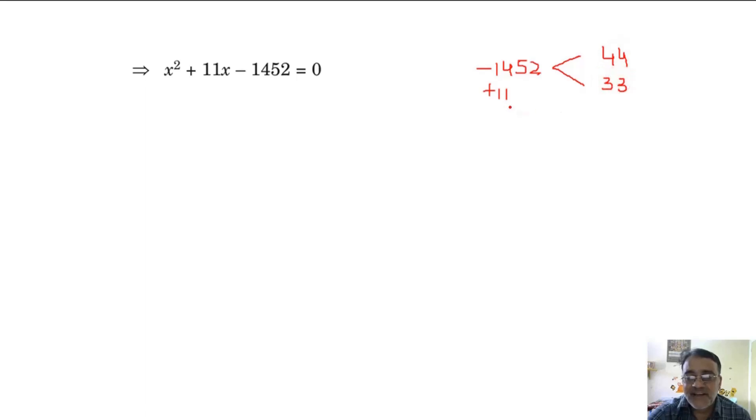If you multiply these two, you will get 1452, and the difference is 11. So sum ka sign laga do, bada wala, that is bada number plus, and this will be opposite sign minus 33.